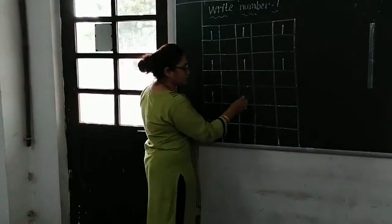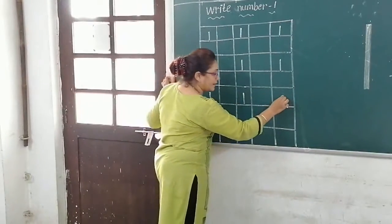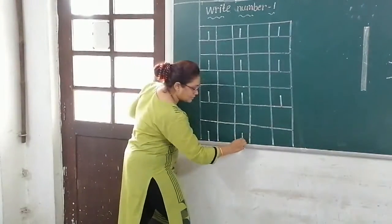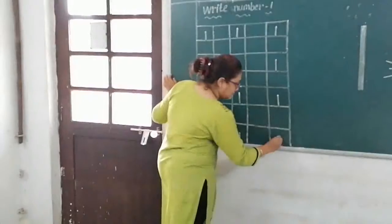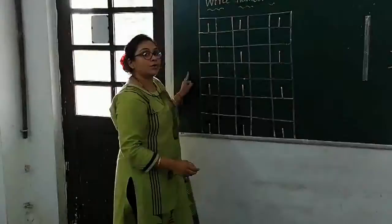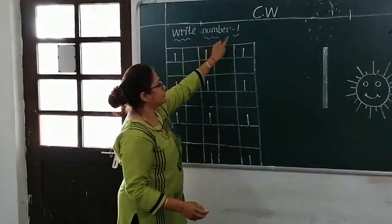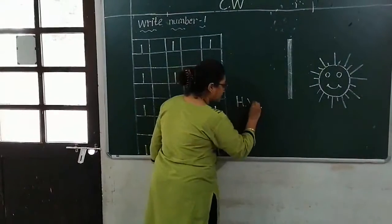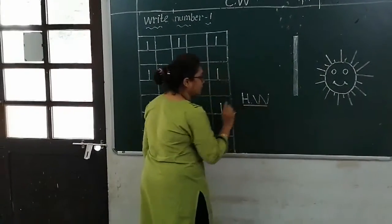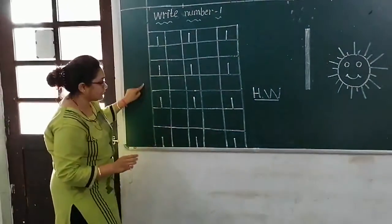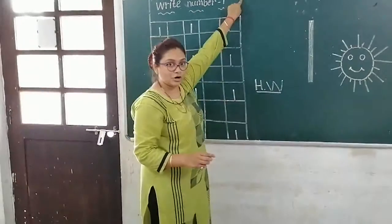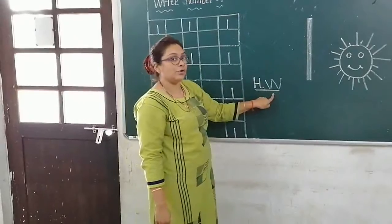This is number one. What is this? Number one. Leave one line and write number one — standing line, up to down, number one. You have to write C.W. and write number one like this. On the next page you have to write H.W. — homework page. First page C.W., next page H.W. You have to write like this — same, C.W. and H.W.